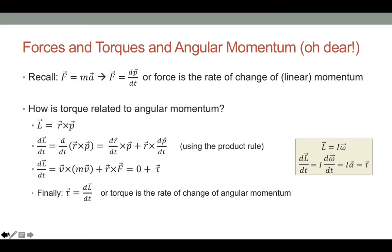We could also use the first definition L equals I times omega. Taking the derivative, with I constant for an object spinning around a fixed axis, gives I times angular acceleration alpha — and torque equals I times alpha. So again, the rate of change of angular momentum is the torque, confirming both definitions give the same result.